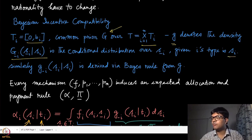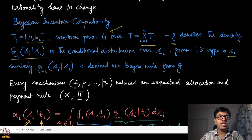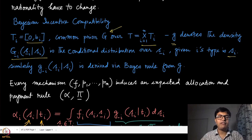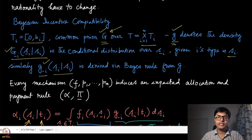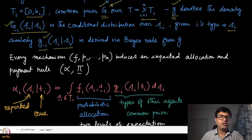We are assuming agent i knows its own type — this is something like an interim state where it knows its own type but does not know the types of the others; it can only have a probabilistic belief over them. Similarly, lower case g_{-i}(s_{-i} | s_i) is the density derived from the original g using Bayes' rule.